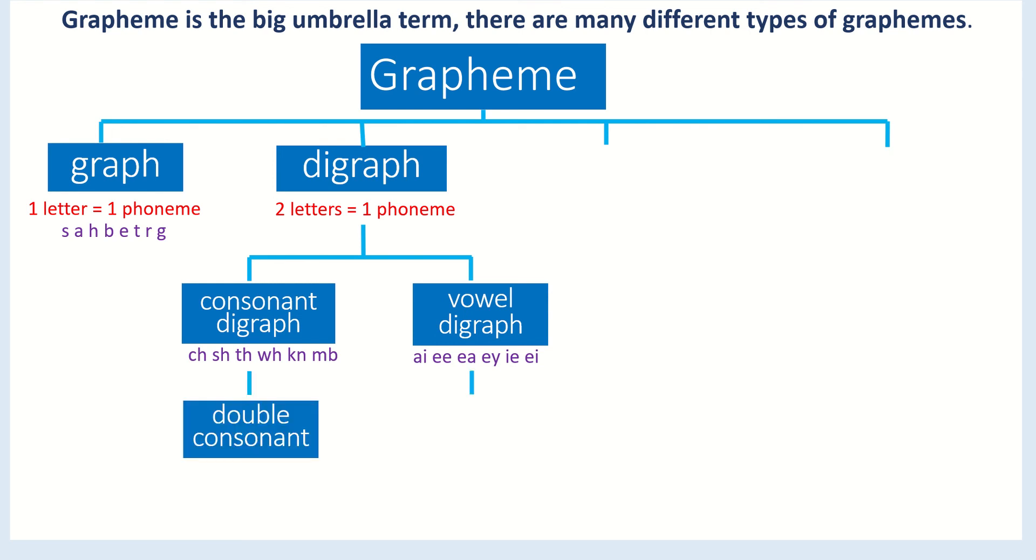We can also have double consonant digraphs. Some letters double, not all letters double, but some do, and we learn these as digraphs, two letters making one phoneme.